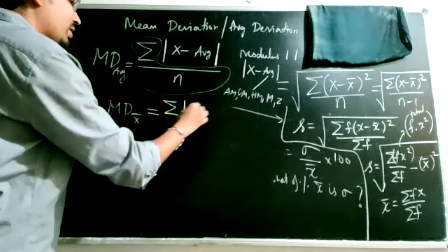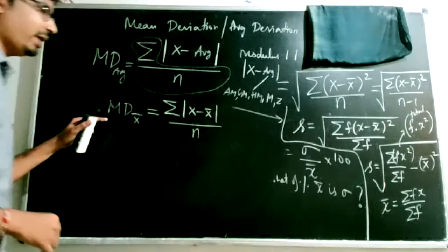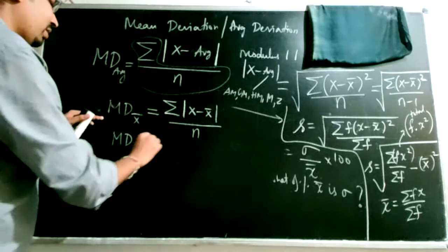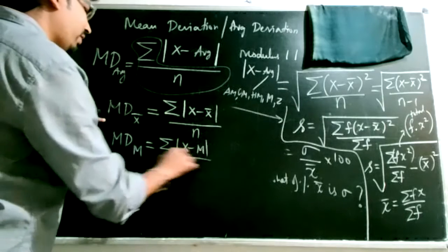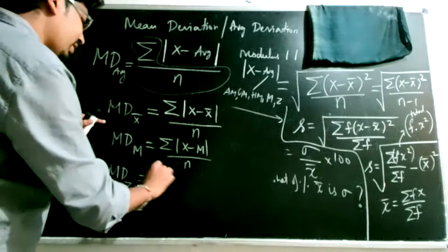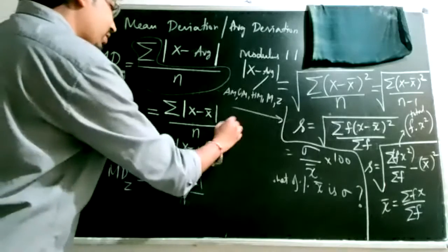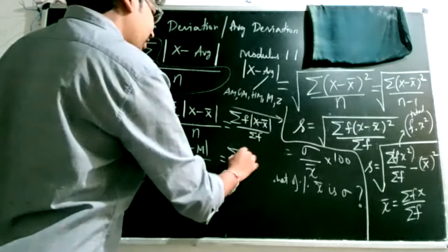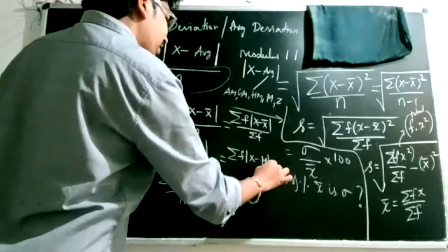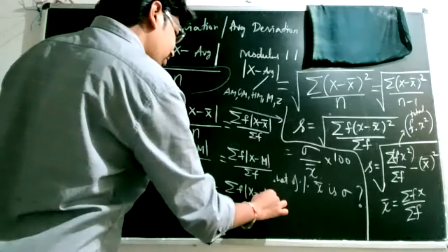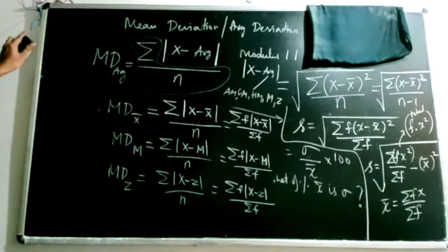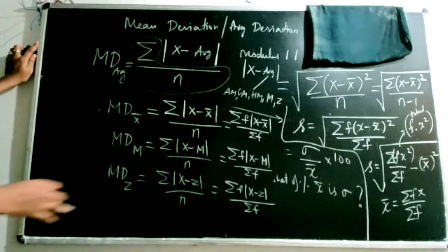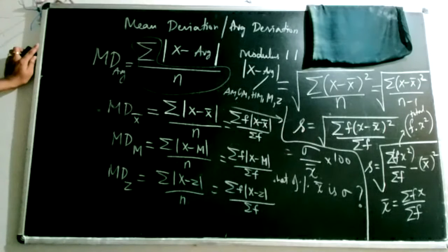If using x-bar as the average, mean deviation is Σ|x − x̄| / n. If using median, it is Σ|x − median| / n. If using mode, it is Σ|x − mode| / n. For the examination, you need not worry too much about these — at most you may be asked to define measures of dispersion and their broad categories: absolute measures and relative measures. Focus on deeper knowledge of standard deviation, its formula, calculation of CV, and how to make decisions based on observed values of mean, standard deviation, and CV.